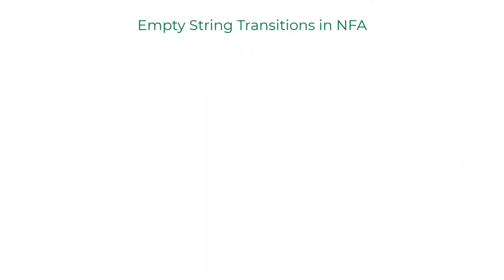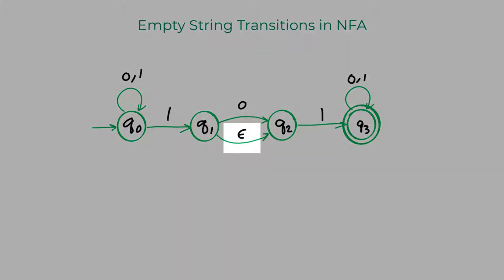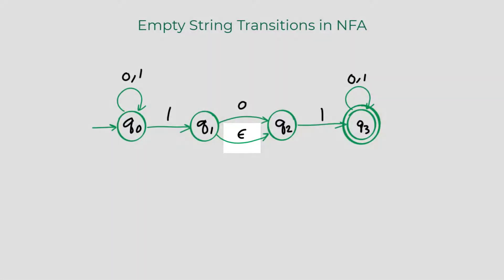One of the special features of NFA is that it can have an empty string transition. Take a look at this example NFA. When the machine reaches the state Q1, it automatically reaches Q2 and both these states become active.